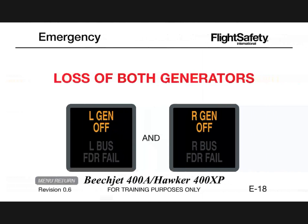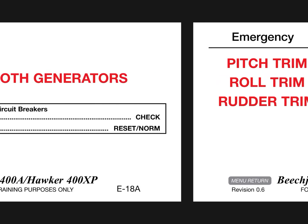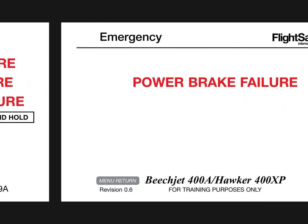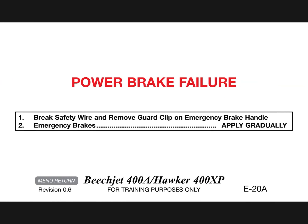Loss of both generators: generator field and start generator circuit breakers aft main panel check, generator reset left and right reset. Normal pitch trim runaway or failure, roll trim runaway or failure, rudder trim runaway: interrupt autopilot disengage switch push and hold. Power brake failure: brake safety wire remove, guard clip on emergency brake handle.